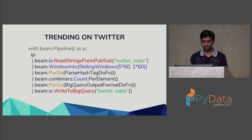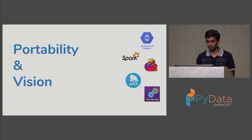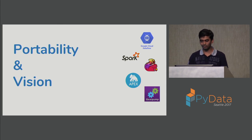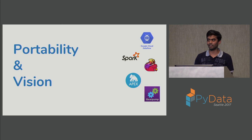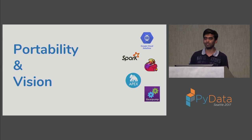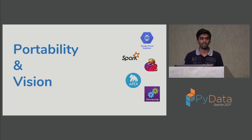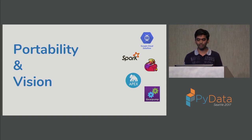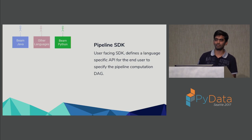Now I want to use the remaining time to talk about the vision for Beam and portability. I've mentioned that you can run your Beam pipeline on different execution engines, so let me walk through the architecture that enables this. Currently Beam Java supports five different execution runners: Google Cloud Dataflow, Apache Spark, Apache Flink, Apache Apex, and Gearpump. The first thing the user interacts with is a pipeline SDK in their particular favorite language — there's a Java SDK, a Python SDK, and you could assume an R SDK or other languages in the future.